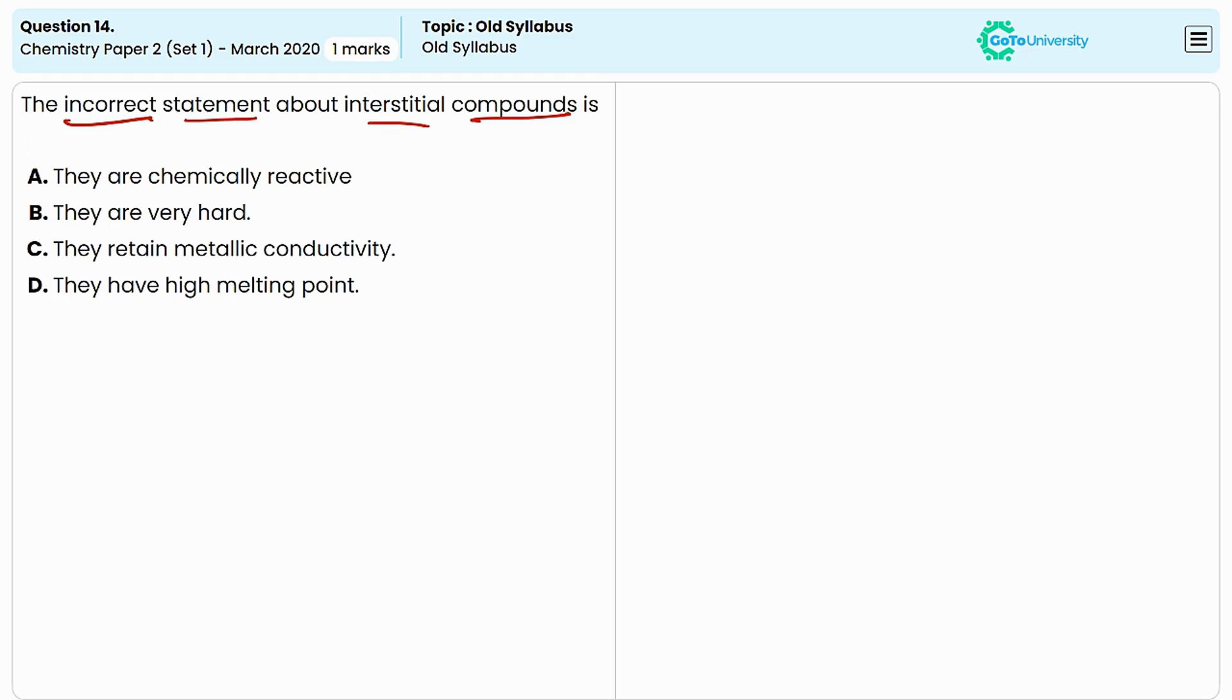Interstitial compounds are a class of compounds where small atoms occupy the interstitial spaces within the crystal lattice of a host metal or metal alloy. These compounds are produced when small non-metallic atoms such as hydrogen, carbon, nitrogen or boron are inserted into the gaps between the larger metal atoms in a crystal.